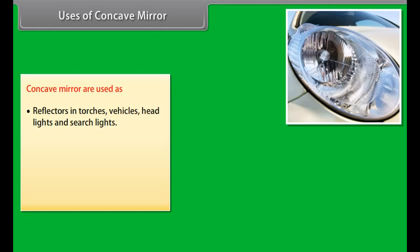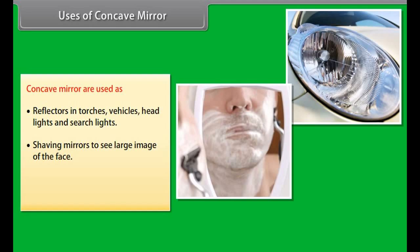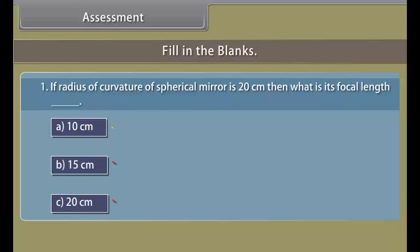Uses of concave mirrors: Concave mirrors are used as reflectors in torches, vehicles, headlights, and searchlights. They are used as shaving mirrors to see large images of the face. Dentists use them to see large images of the teeth of patients.